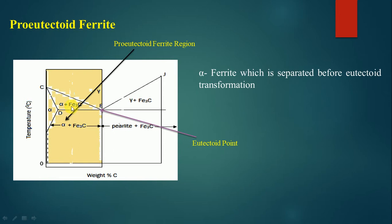This alpha which has separated before the eutectoid transformation is called primary, free, or pro-eutectoid ferrite. This is the concept of pro-eutectoid ferrite, which is likely to separate out before the 0.2 percentage composition we have taken as an example.